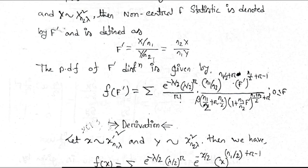divided by beta of n1 by 2 plus r and n2 by 2, times the quantity 1 plus n1 by n2 F prime all to the power n1 plus n2 by 2 plus r.